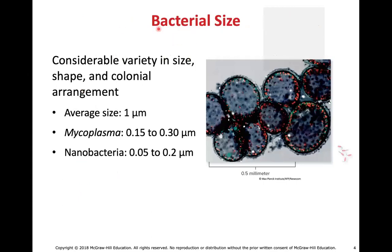As mentioned in the microscopy portion of Chapter 3, bacteria are small. The average size is about one micron in diameter — about 10 times smaller than the typical eukaryotic cell, which is about 10 microns in diameter. Being within the one micron range does allow us to see these things under a standard light microscope.